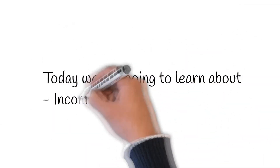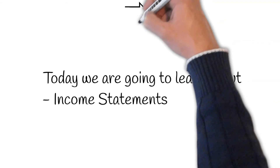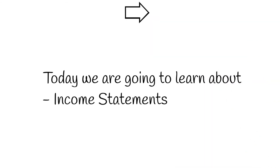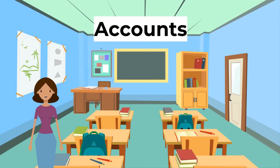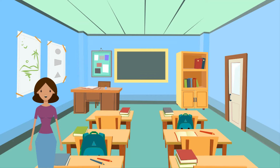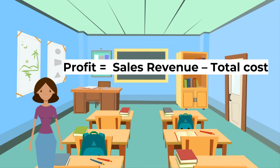In today's lesson we will be learning about income statements. Accounts are the financial records of a firm's transactions. Final accounts are prepared at the end of the financial year and give details of the profit or loss made, as well as the worth of the business. The equation for profit is: profit equals sales revenue minus total costs.